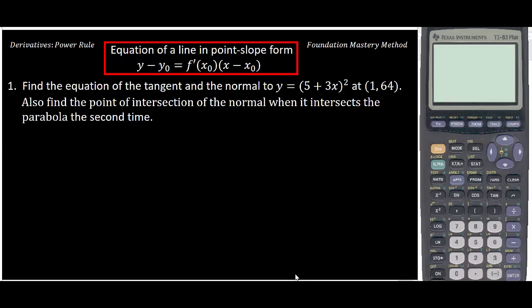Find the equation of the tangent and normal to y = (5 + 3x)² at (1, 64). Also find the point of intersection of the normal when it intersects the parabola the second time. First we need to find the equation of tangent line and the normal line. We have the point already: x₀ is 1 and y₀ is 64. We just need to find f'(x₀).